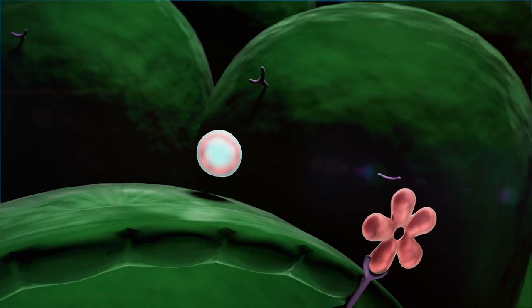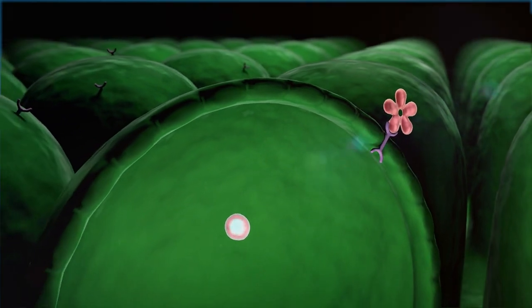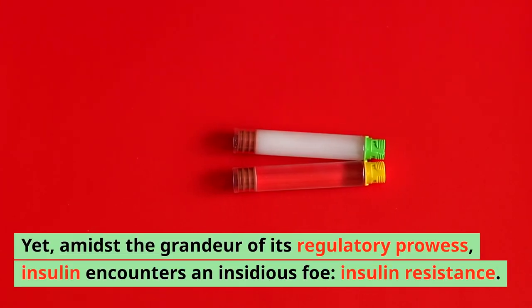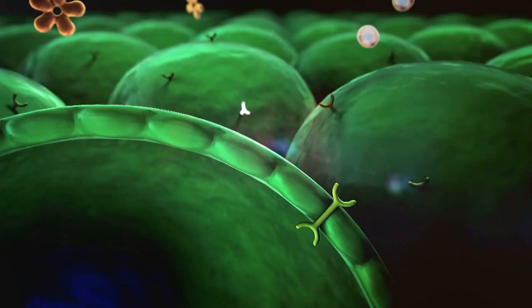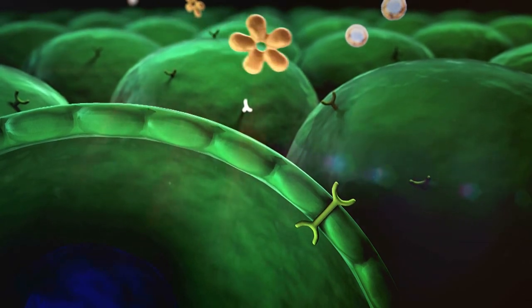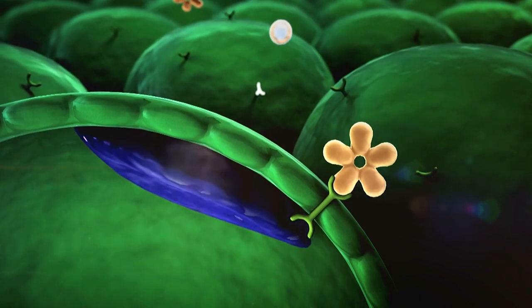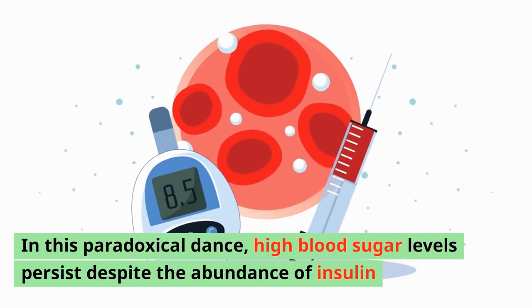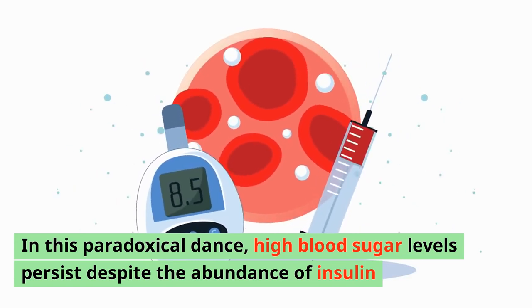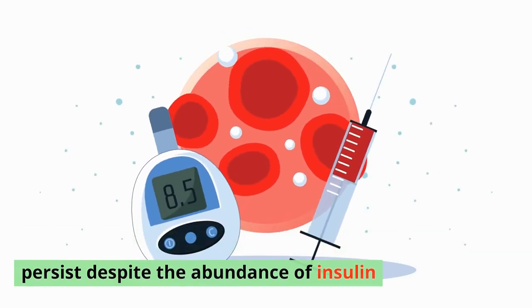At the heart of the metabolic symphony lies insulin, the maestro orchestrating the delicate balance of blood sugar levels. Yet amidst the grandeur of its regulatory prowess, insulin encounters an insidious foe: insulin resistance. This formidable adversary casts a dark shadow over the efficacy of insulin's directives, rendering its signals futile in the face of cellular defiance. In this paradoxical dance, high blood sugar levels persist despite the abundance of insulin, ensnaring individuals in a labyrinthine cycle of metabolic disarray.